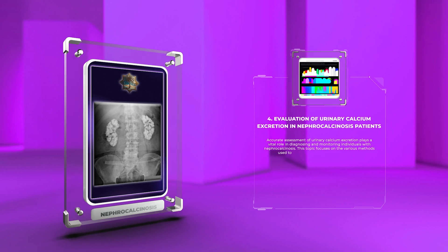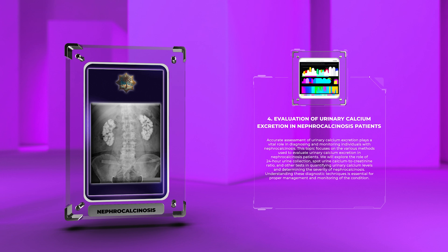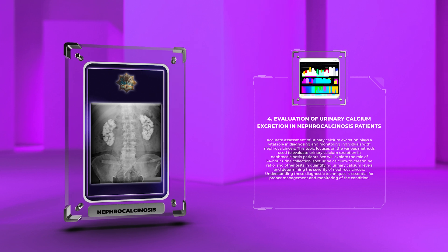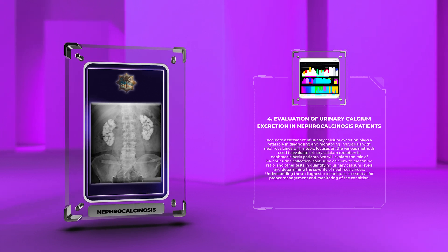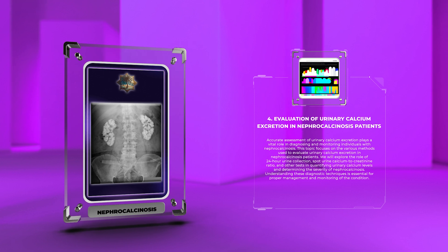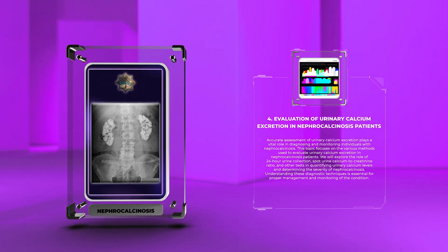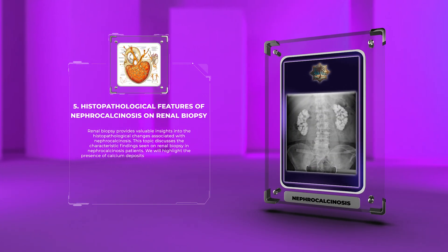Accurate assessment of urinary calcium excretion plays a vital role in diagnosing and monitoring individuals with nephrocalcinosis. We will explore the role of 24-hour urine collection, spot urine calcium-to-creatinine ratio, and other tests in quantifying urinary calcium levels and determining the severity of nephrocalcinosis. Understanding these diagnostic techniques is essential for proper management and monitoring of the condition.